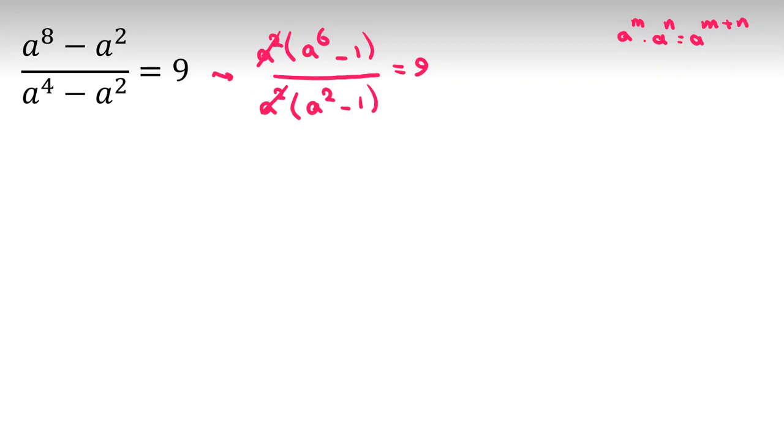Let's cross multiply, or multiply both sides by a squared minus 1. Now a to the 6 minus 1 equals 9 times a squared minus 1.